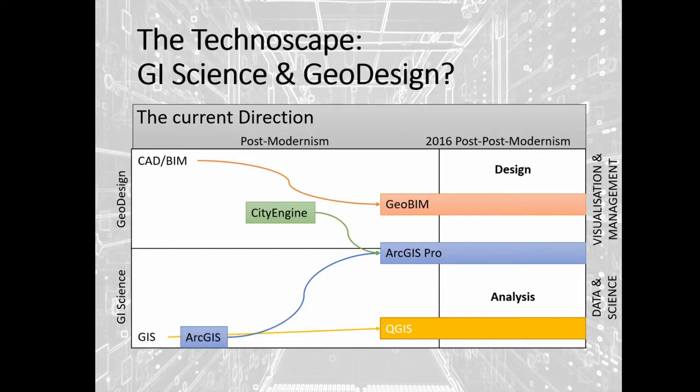How does this relate to GI science? As I see it, CAD and BIM are moving toward GeoBIM — a geographically related form. ArcGIS and CityEngine are merging toward a central ground bridging GI science and design. Meanwhile, QGIS, being community-led, is staying more on the analysis side.